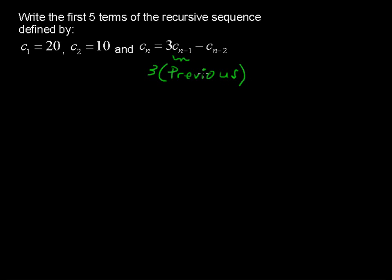The sequence calls on its previous terms, and not even just the one previous. This C sub n minus 2 says that we're going to subtract the two terms back, or the number that is two terms ago.